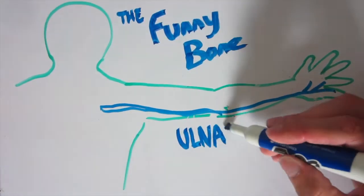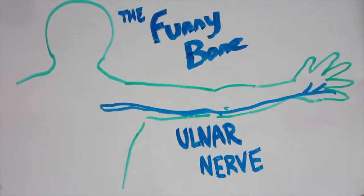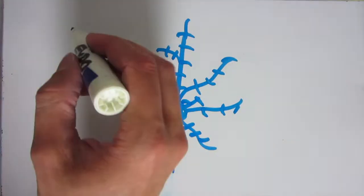People call it the funny bone, but it's actually a nerve. You probably know that nerves are the body's data cables, but to really understand what's going on here, we're going to have to talk about the cells that make them up, neurons.